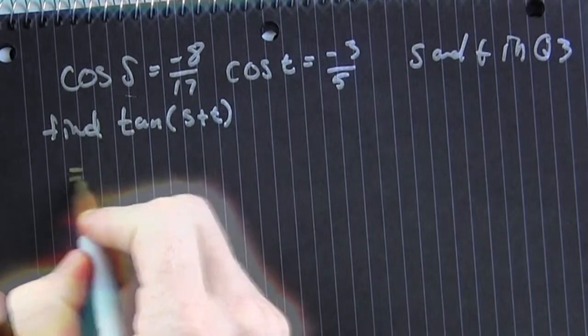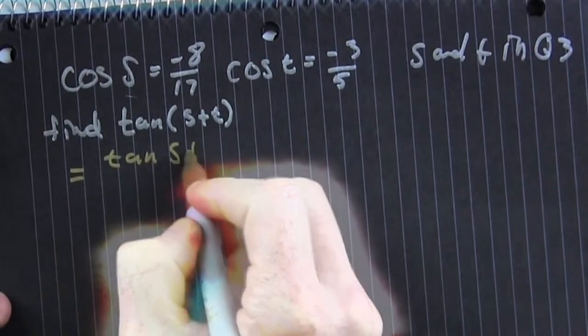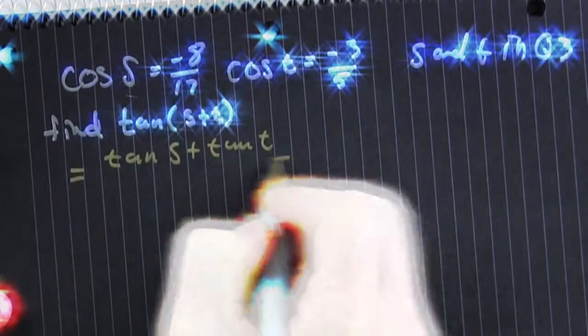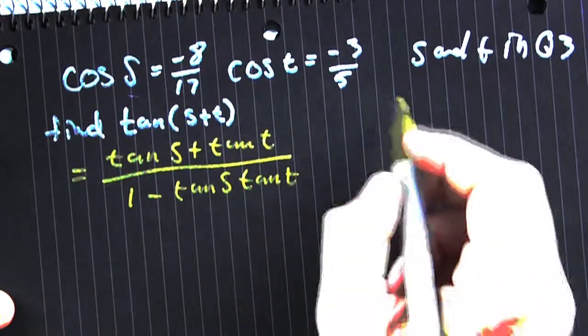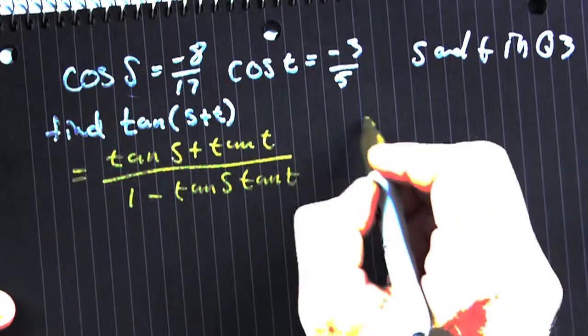Now, the tangent of s plus t is the tangent of s plus the tangent of t divided by 1 minus the tangent s tangent t. We are going to construct our triangles with our given information.